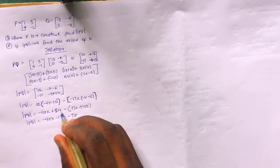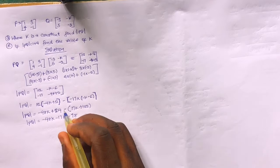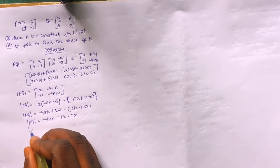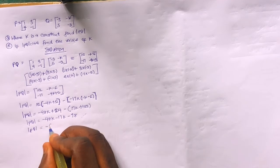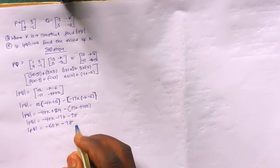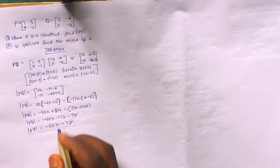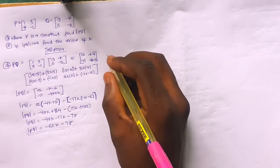So the determinant of PQ equals -65k minus 78. This is the final answer to Question A.